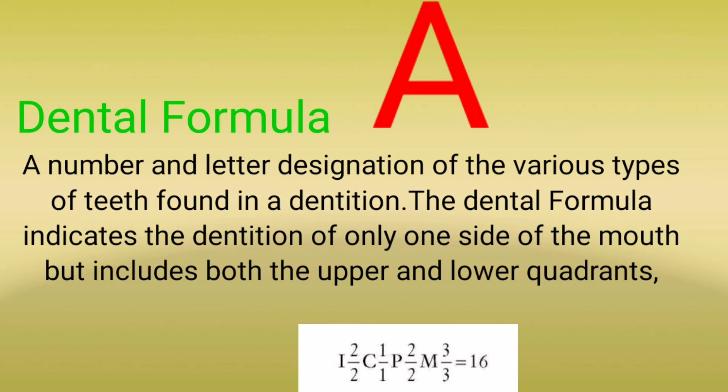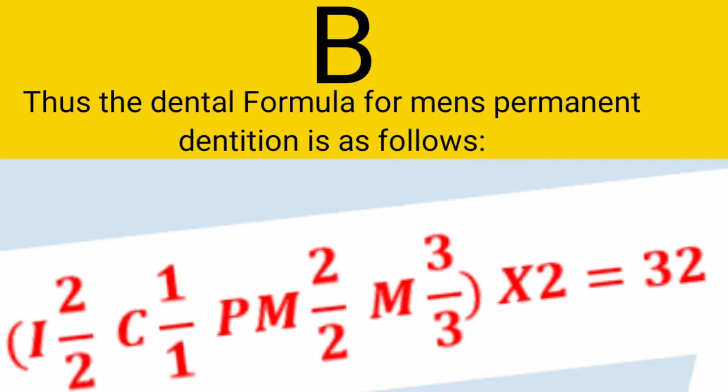Thus, the dental formula for men's permanent dentition is as follows: I indicates the incisor, 2 upper and 2 lower; C indicates the canine, 1 upper and 1 lower; PM indicates the premolar, 2 upper and 2 lower; M indicates the molar, 3 upper and 3 lower.